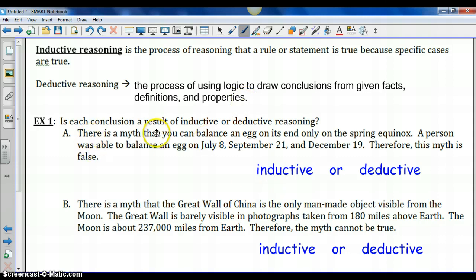So in example one, we are to figure out if this is inductive or deductive. There is a myth that you can balance an egg on its end only on the spring equinox. A person was able to balance an egg on July 8th, September 21st, and December 19th. Therefore, this myth is false. These are all dates other than the spring equinox. And there are observations, specific cases, when our statement was false, or counterexamples. Therefore, this is using inductive reasoning.